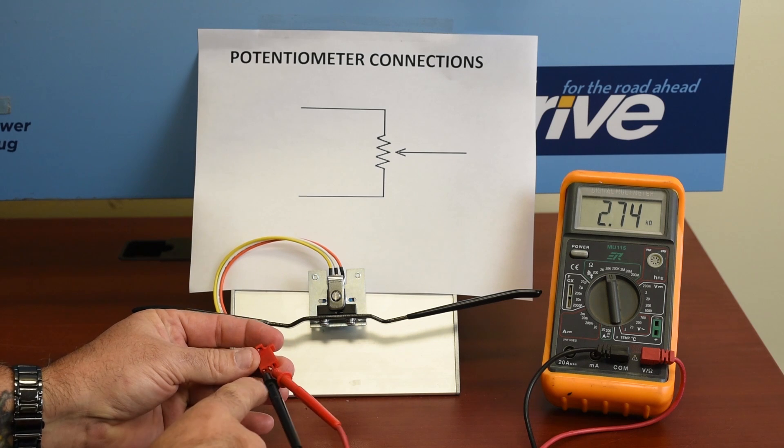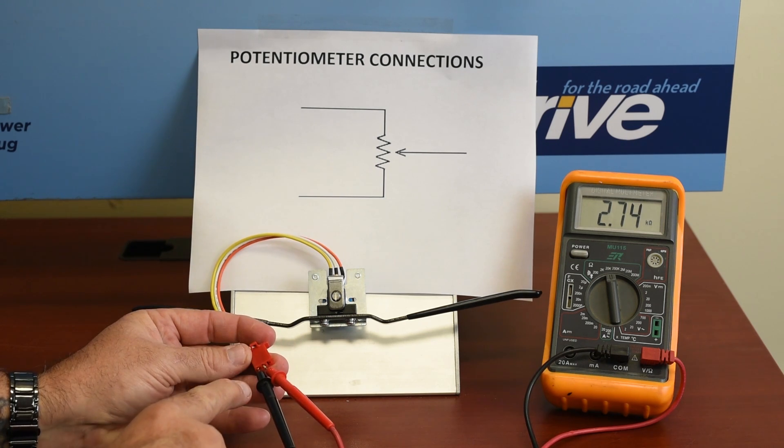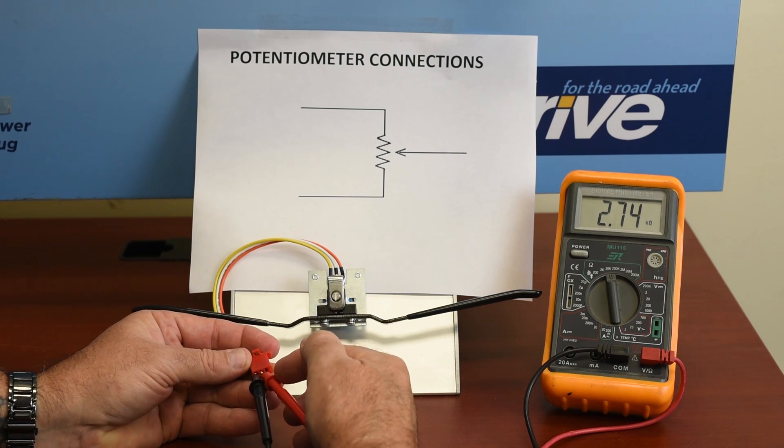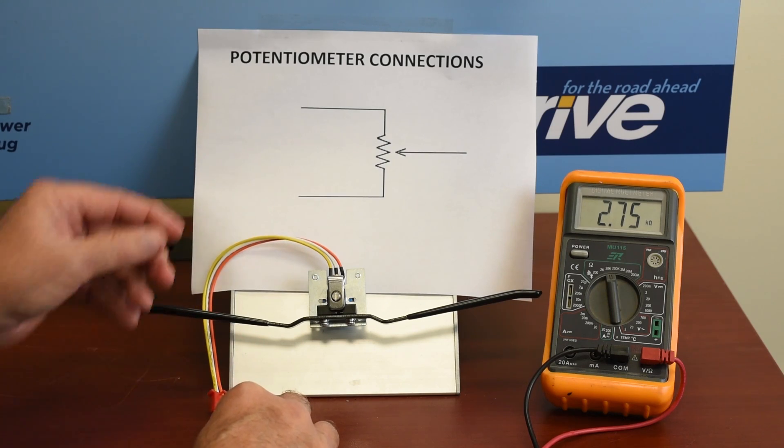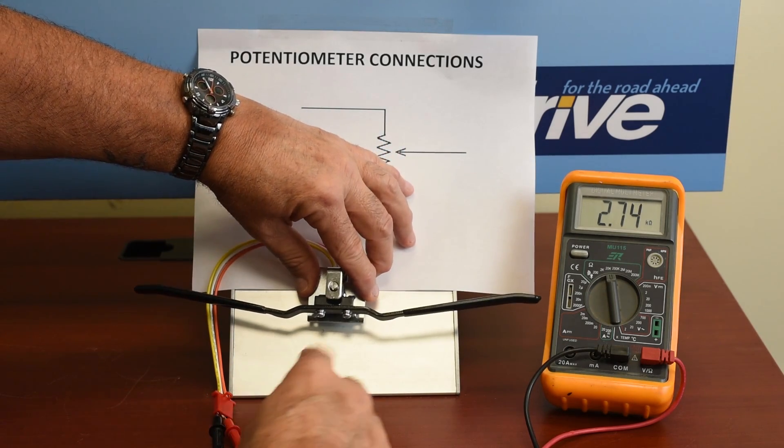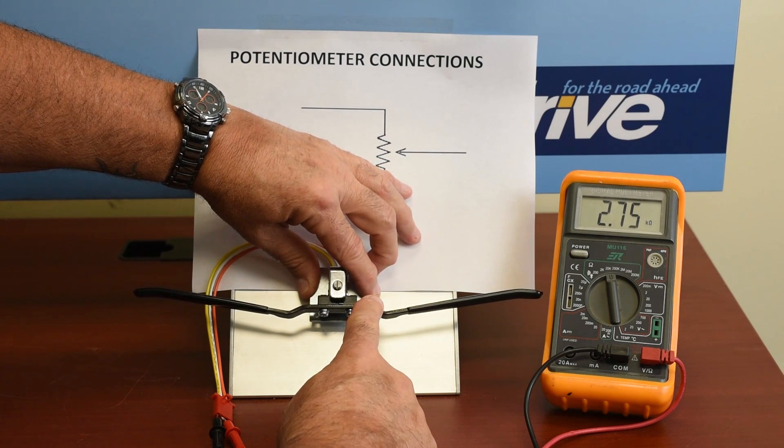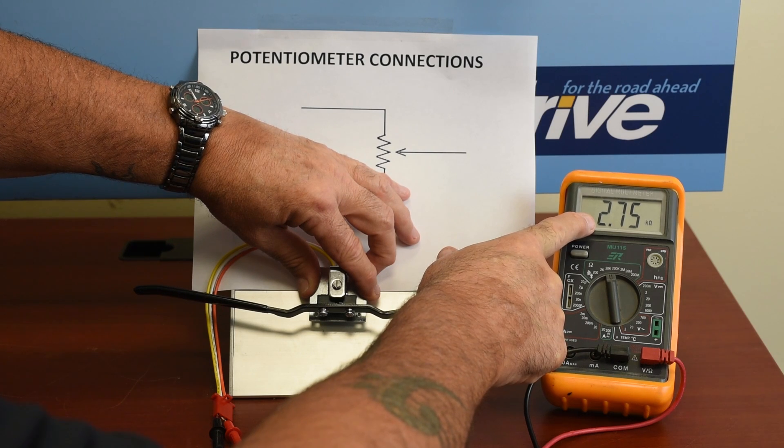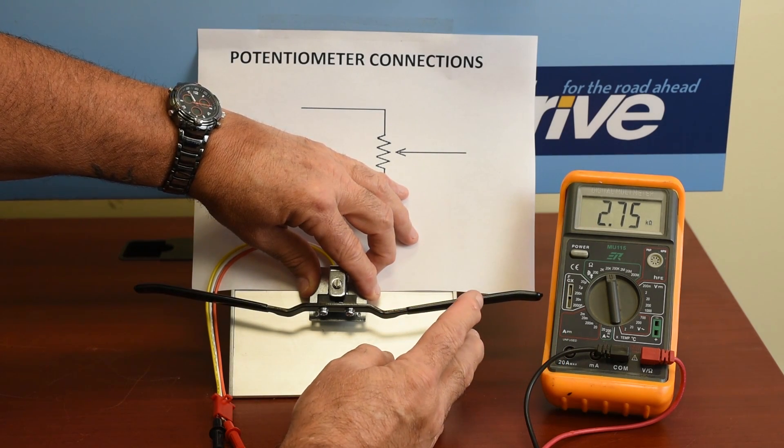What we do here to test the swing of the pot to look for dead spots is you take one lead and put it to an outside terminal on the connector, and the other lead to the center of the connector. And then I'll just hold this while I swing this throttle pot through its range. And as we do this, we're going to watch the gauge, the meter, and see if we have a very smooth transaction.